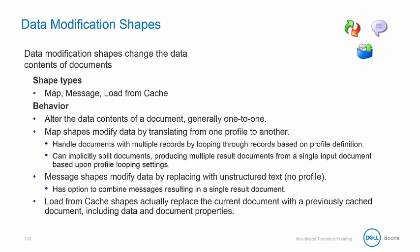Data modification shapes change the data contents of documents. These shapes act at the profile level and typically ignore document batch or group properties of the document stream. These are the map, message, and load from cache shapes. A map shape will act identically on grouped documents or a single document stream, as will business rules. Map shapes can change the instantiation of the document stream through looping, identifiers, and qualifier settings.